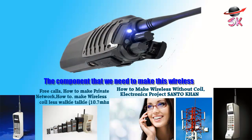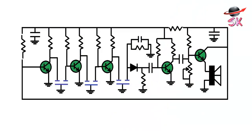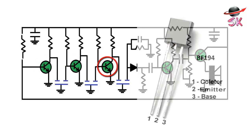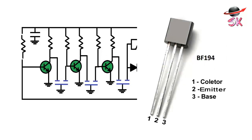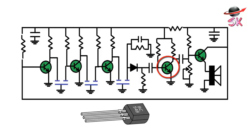The components that we need to make this wireless. Transistor number 1, 2, 3: BF 194. Transistor number 4: BF 194, BC 148.